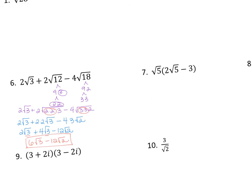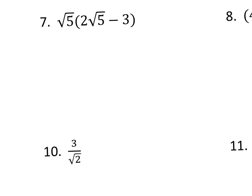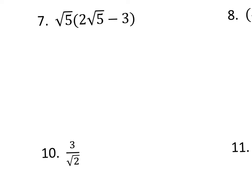Alright, moving on to number 7. Number 7, I'm going to have to use a property called distributive property. That means that this term has to go to every single term. So my first time, I have √5 times 2√5. Well, who's on the outside of my house? I have a 2 on the outside and nothing else, and then I have two 5s on the inside.